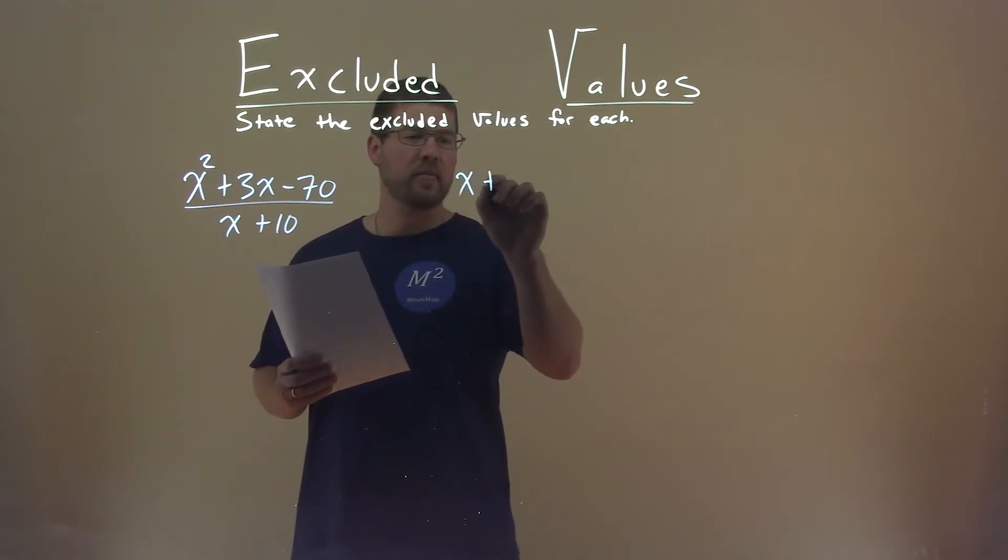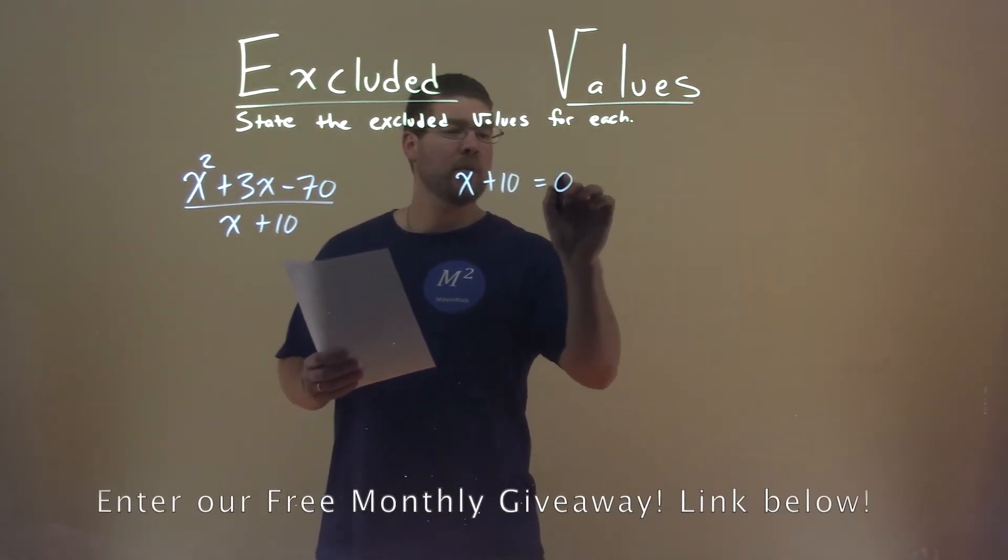So we take our denominator, x plus 10, and we're going to set it equal to 0.